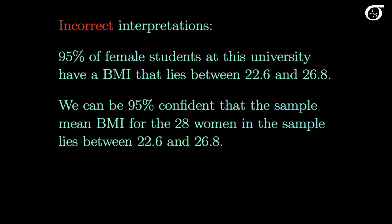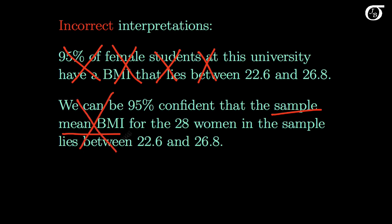Let's look at a couple of misconceptions that people sometimes have — these are most definitely incorrect interpretations of a confidence interval. The first misconception is wrong because we are not saying anything about the percentage of students with a body mass index that falls between those two values; we are simply saying something about the population mean value. The second statement is wrong because it discusses the value of the sample mean body mass index, whereas we have constructed a confidence interval for the population mean. A proper interpretation of a confidence interval always relates to the value of a parameter, and not the value of a statistic.